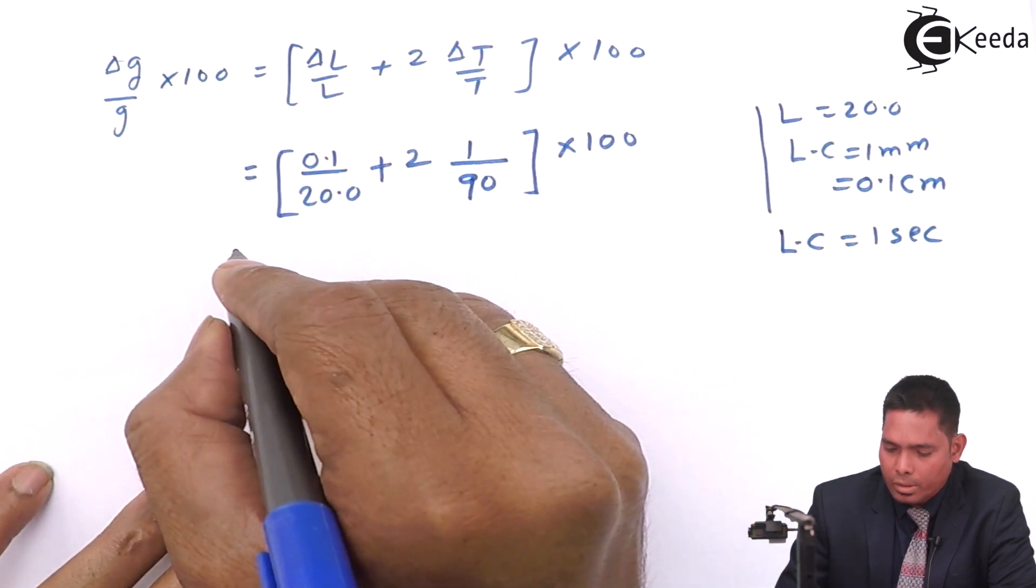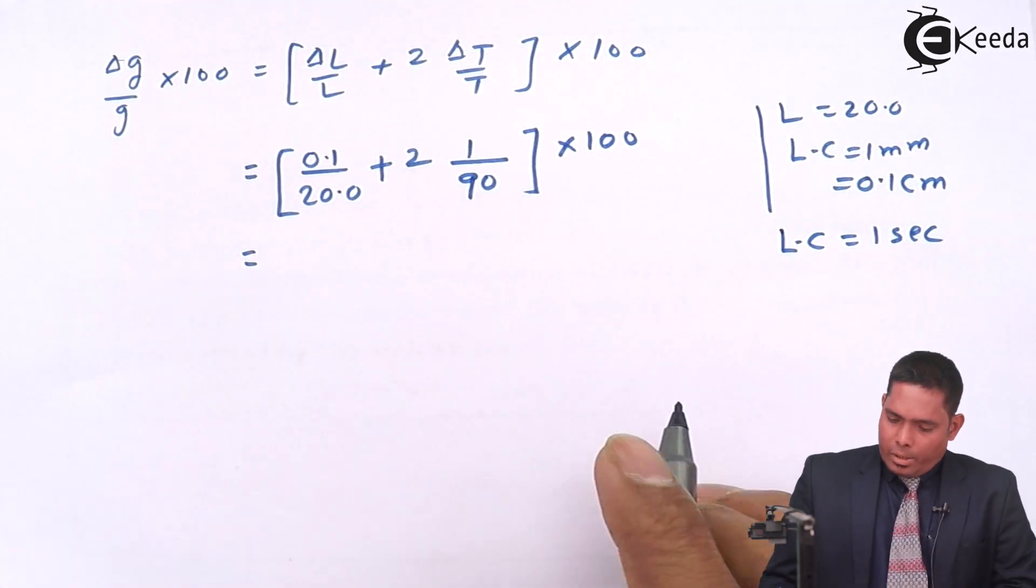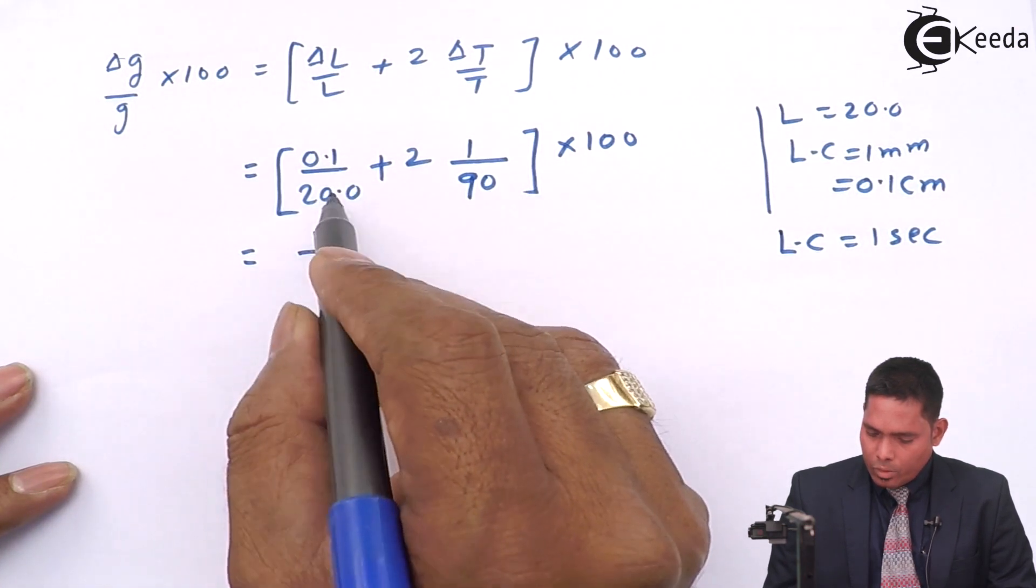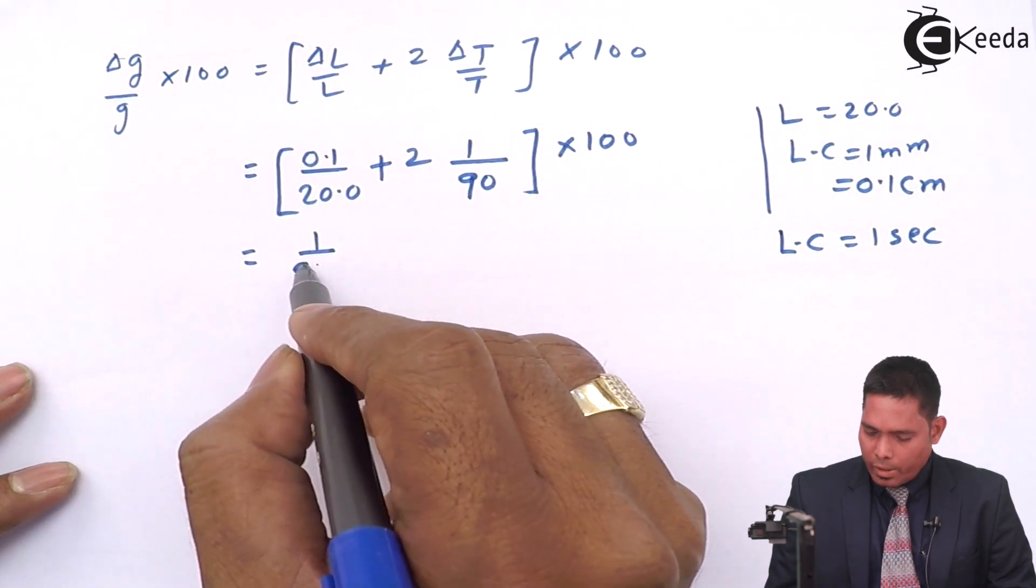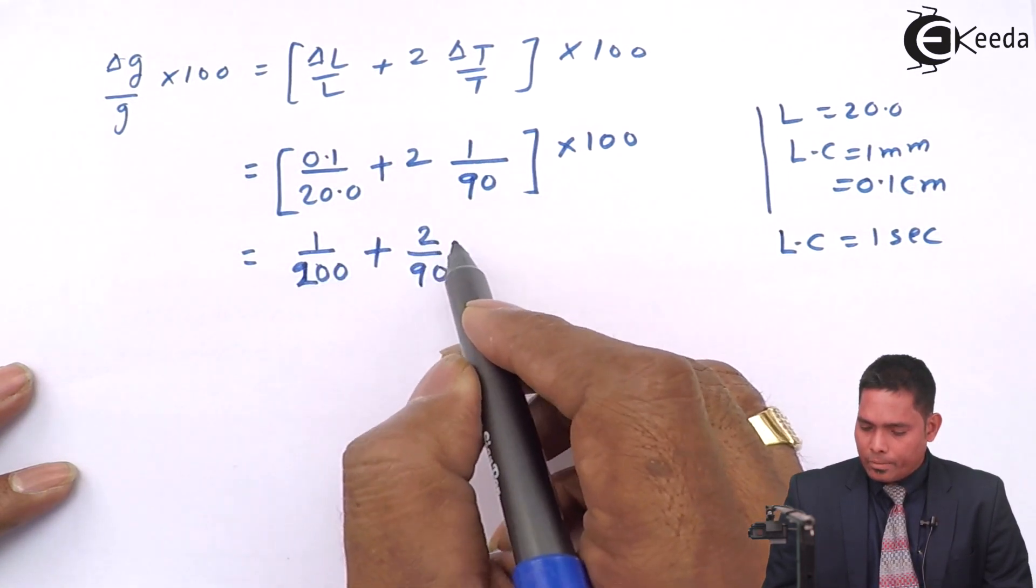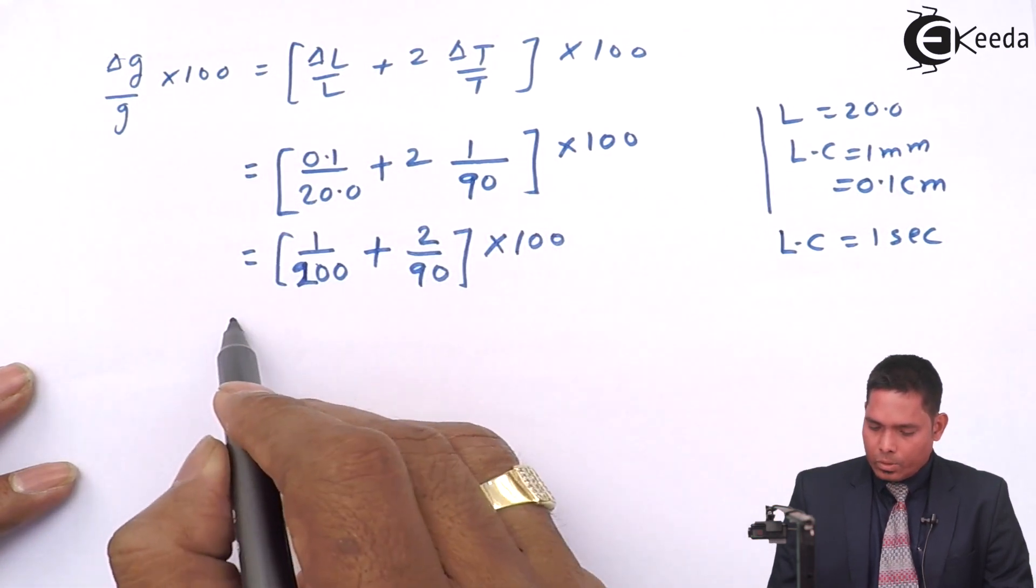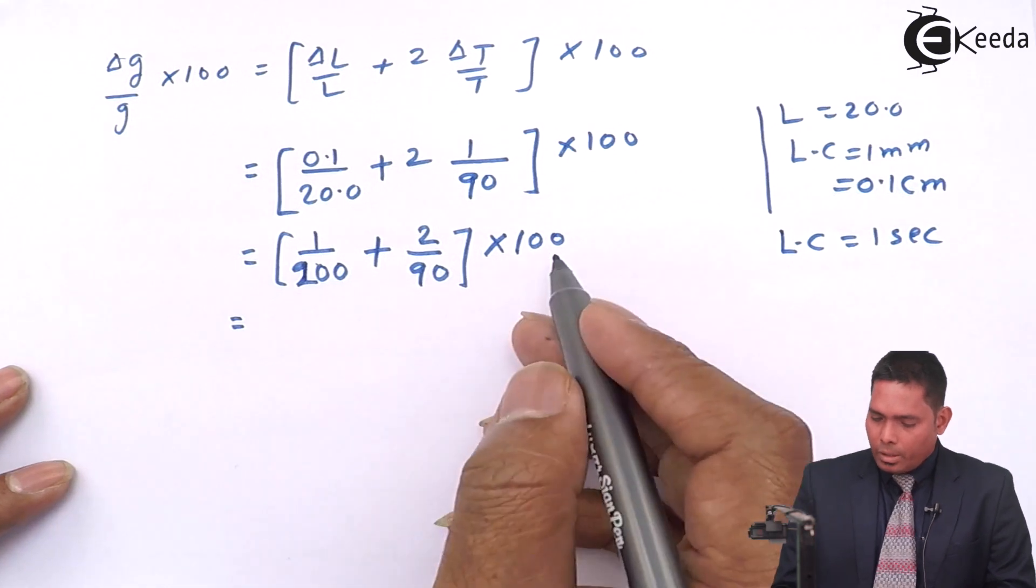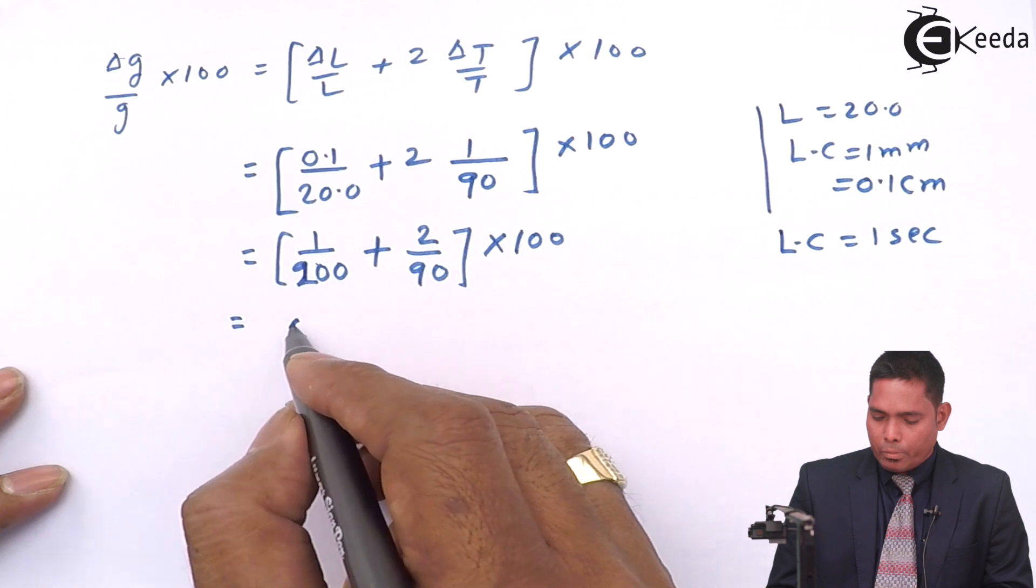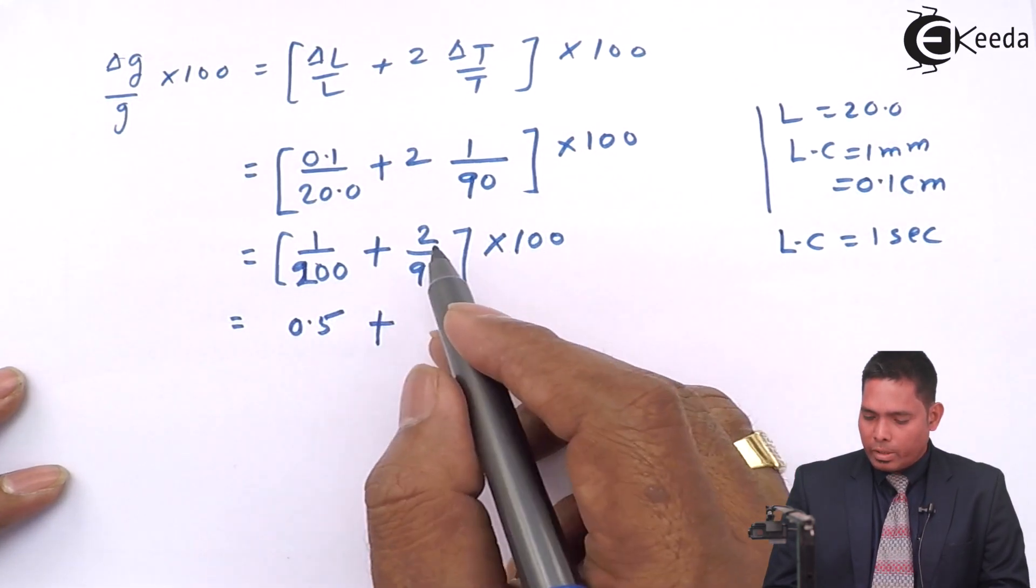Now this you have to solve and get the answer. This is 1 by—this is 20, so it is 200—plus this is 2 divided by 90, into 100. So this comes out to be, I'll just take 100 inside, so it will be 100 by 20, 0.5, plus this is 200 goes into 20 by 9, by 9 percent.